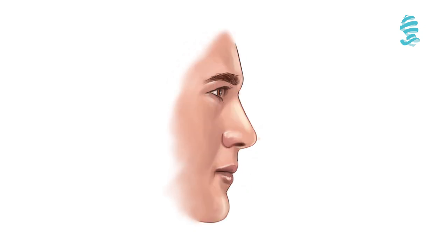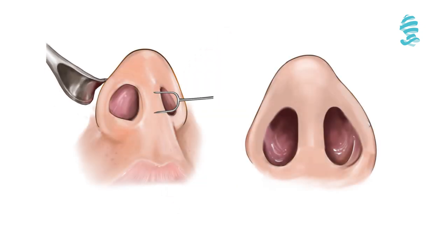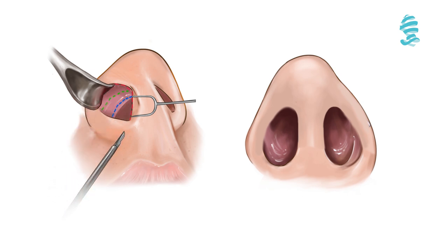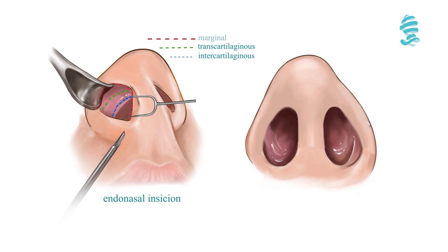The length of the nose is the distance from the root of the nose to its tip. Rhinoplasty can be done by an endonasal or external approach. In the endonasal approach, all cuts are inside the nose. Endonasal incisions are done around the lower lateral cartilages and can be intercartilaginous, transcartilaginous, or marginal.